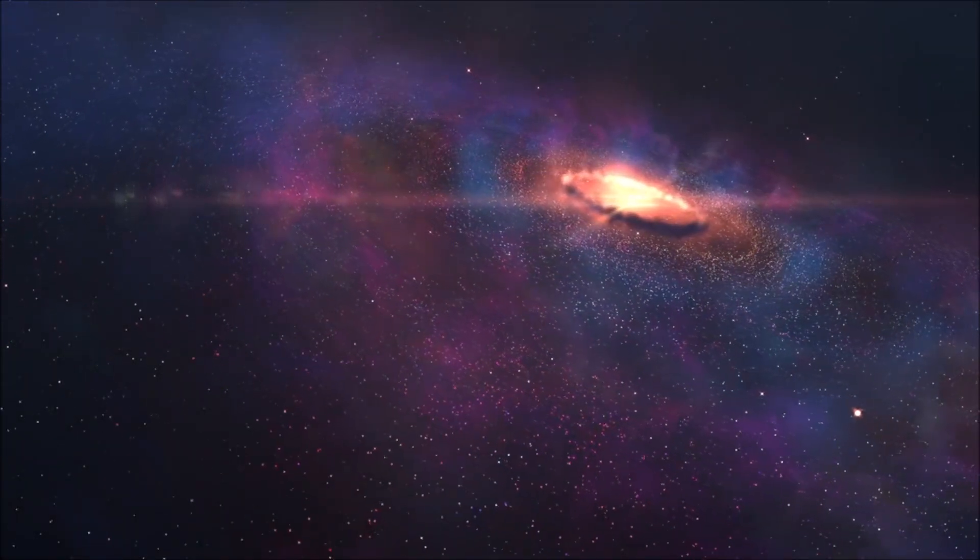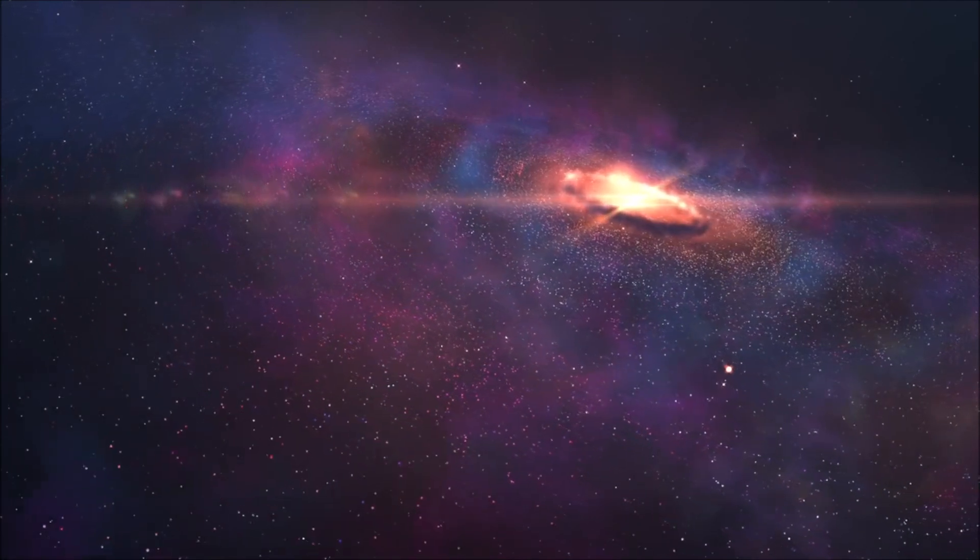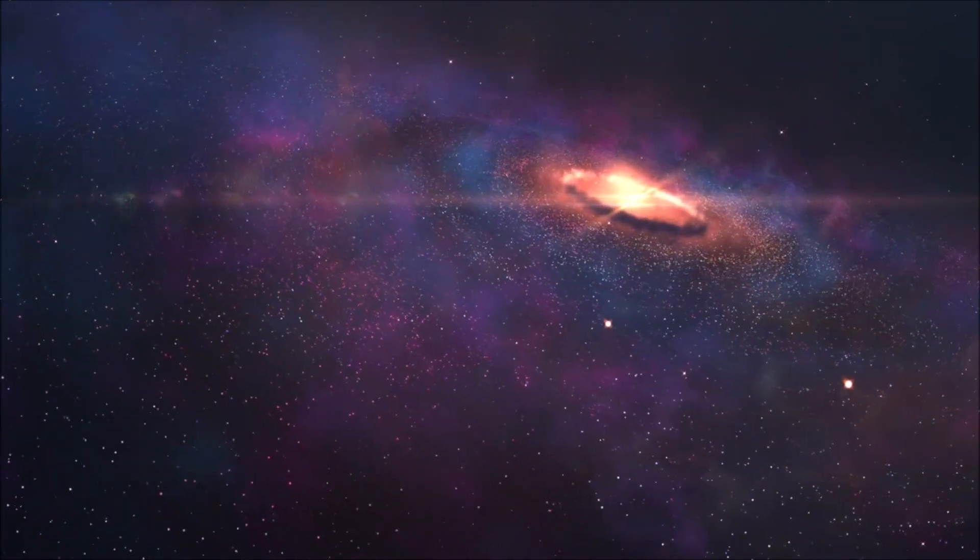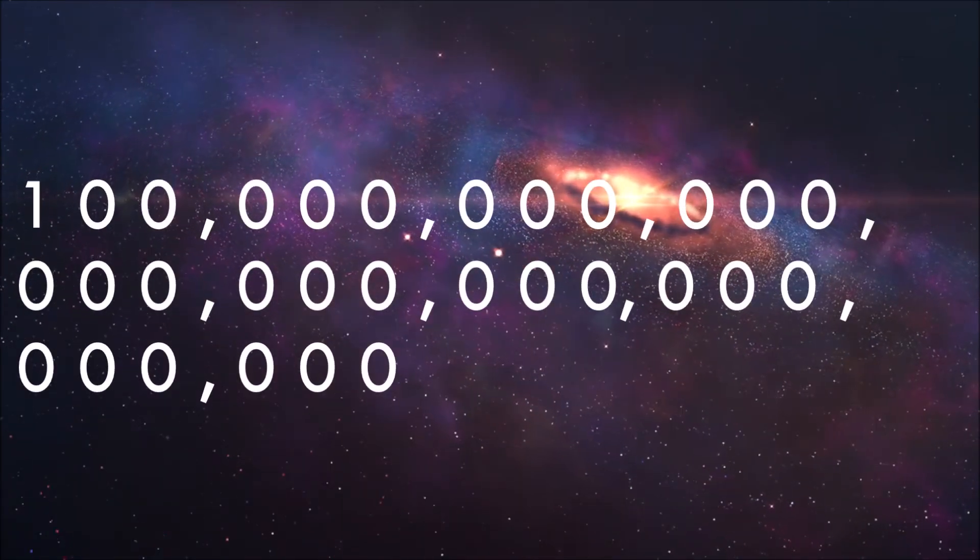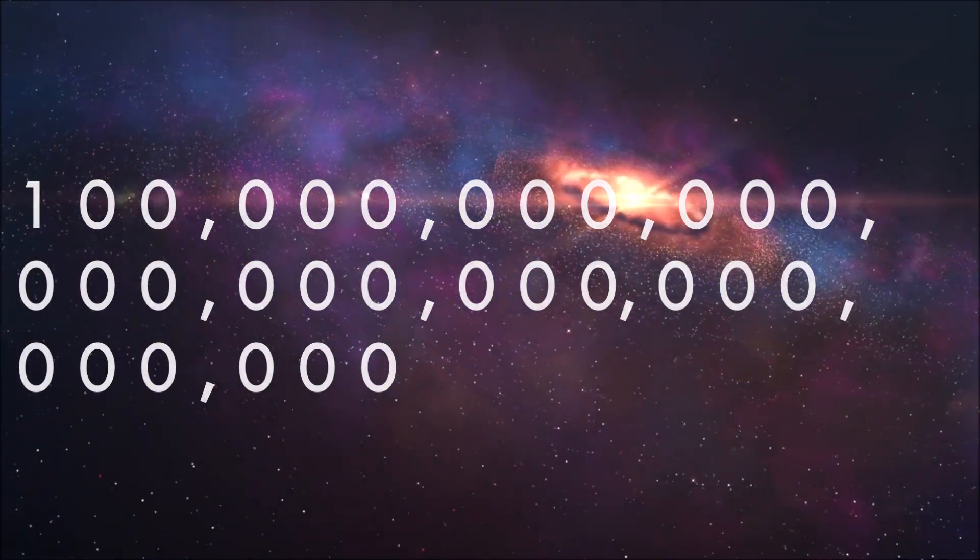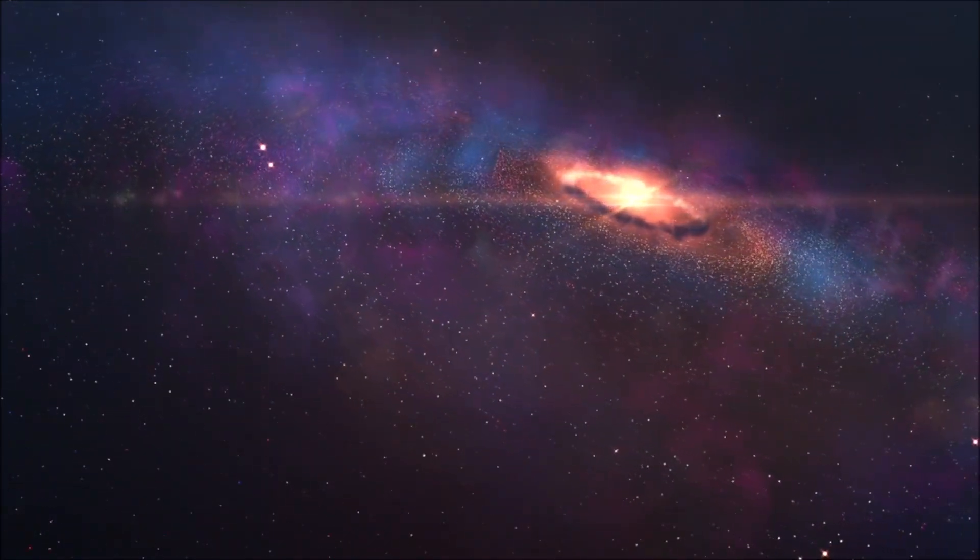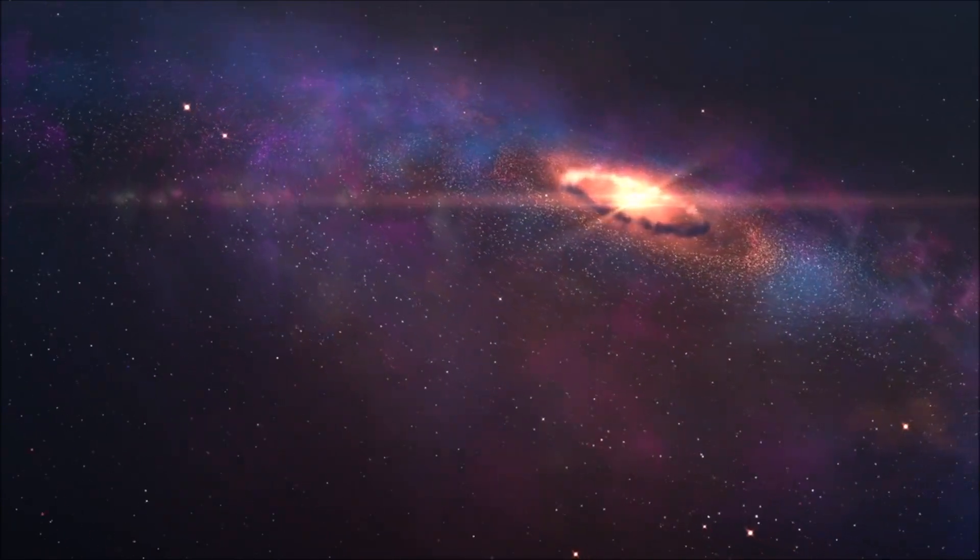Whether you believe in any of these controversial theories or not, there are estimated to be up to 100 octillion stars in the observable universe. That's one with 29 zeros after it. It's likely that if we are one of many intelligent races in the universe, some star somewhere is currently or has previously been harvested with Dyson structure leaning engineering.